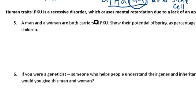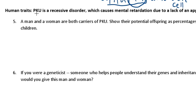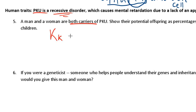Let's switch it up for number five — PKU. It's recessive as well, just like sickle cell. I'm going to use K because K is easier to see in the recessive condition, but you can use P or K, whatever you want. A man and a woman are both carriers of PKU — show their potential offspring. They're both carriers, which means both are big K, little k. Do the cross between them and show the offspring as percentages of PKU and normal. It should look very similar to the one above, so pause it and do that one out.